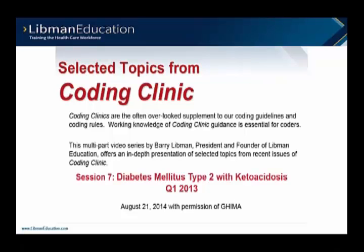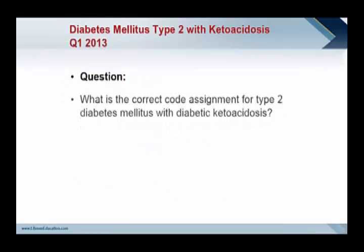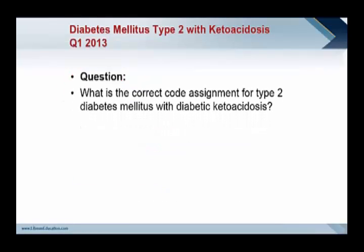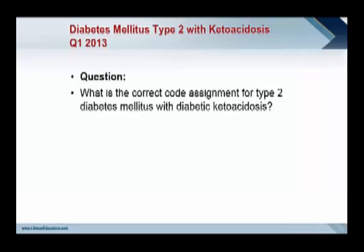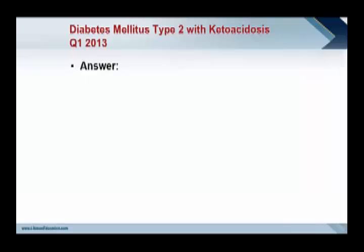Next, we have diabetes type 2 with ketoacidosis, and the question is: what is the correct code assignment for type 2 diabetes mellitus with diabetic ketoacidosis? This next question solves a problem you probably may have already identified in the ICD-10 index and tabular. The previous question tells us that type 1 diabetes with ketoacidosis has two distinct codes, whereas there is no code in ICD-10 currently for type 2 diabetes with ketoacidosis.